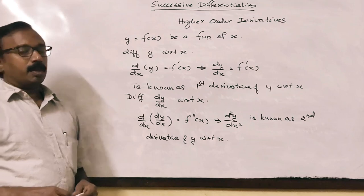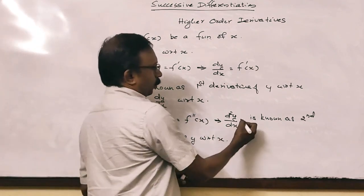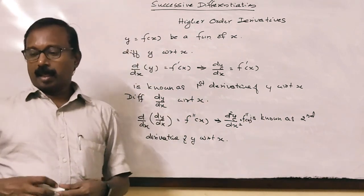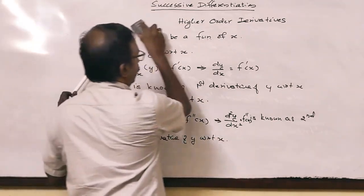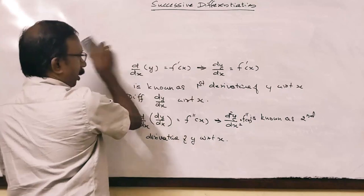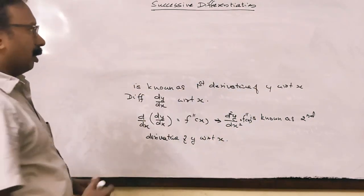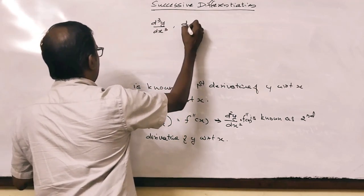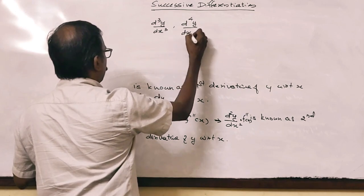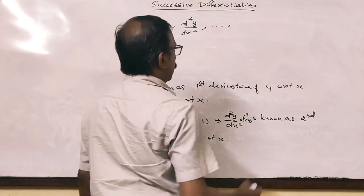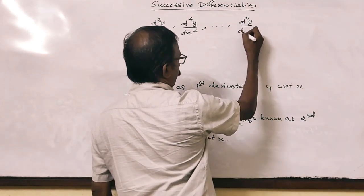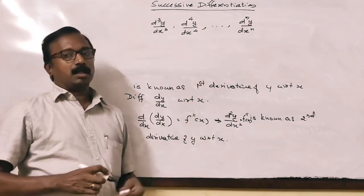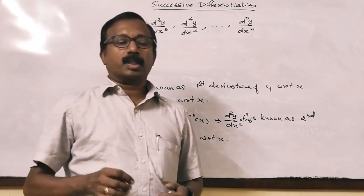This is known as the second derivative of y with respect to x: d²y/dx² is equal to f double dash x. If we differentiate again and again, we have d²y/dx², d⁴y/dx⁴, and dⁿy/dxⁿ. These are called the third, fourth, and nth derivatives of y with respect to x.